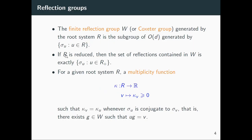Of course with this definition we have that the root system can be written as the union of R+ and minus R+. A Coxeter group W is just a subgroup of the orthogonal group on R^d generated by the reflections associated to the vectors in the root system. If the root system is reduced then all reflections contained in W are exactly the reflections associated to the positive part of the root system. For a given root system we define a multiplicity function, a function from the root system to R where each number kappa_v is bigger or equal to zero, satisfying that kappa_v equals kappa_u whenever sigma_u is conjugate to sigma_v.